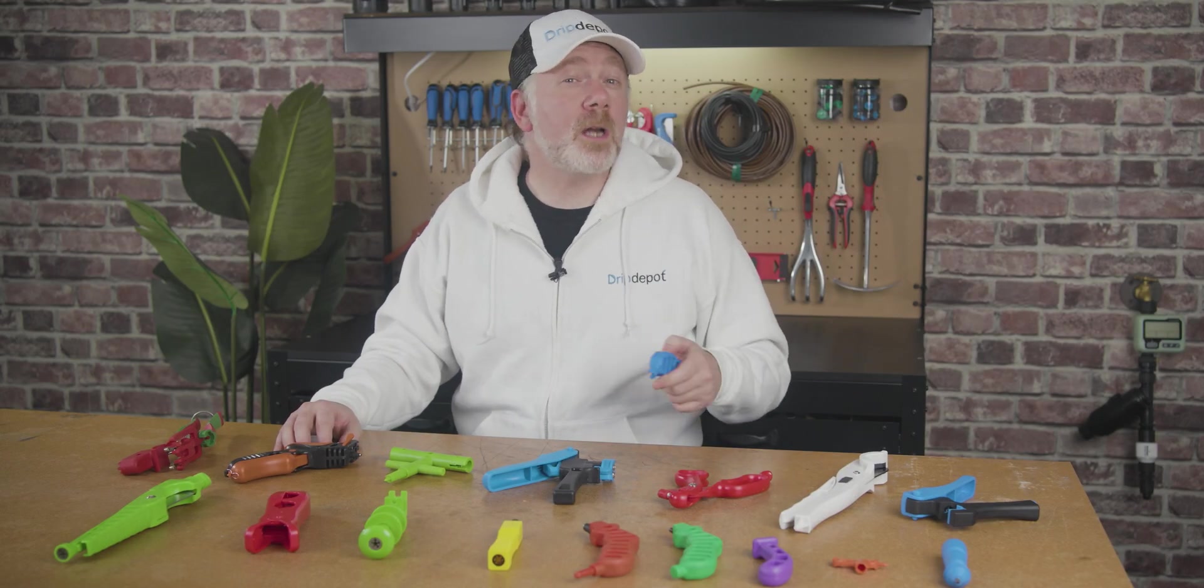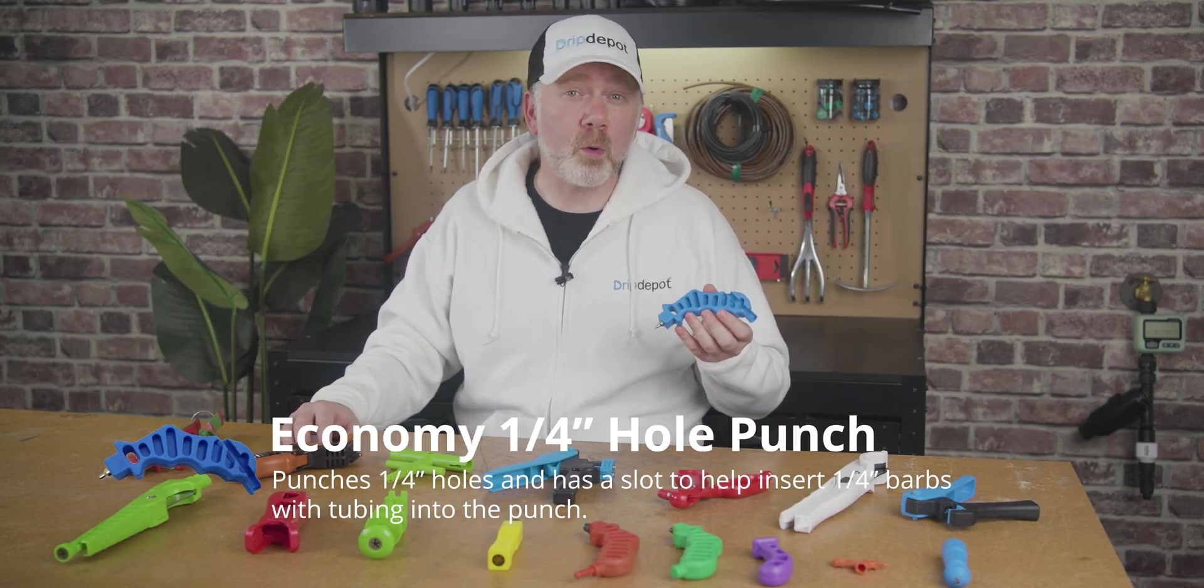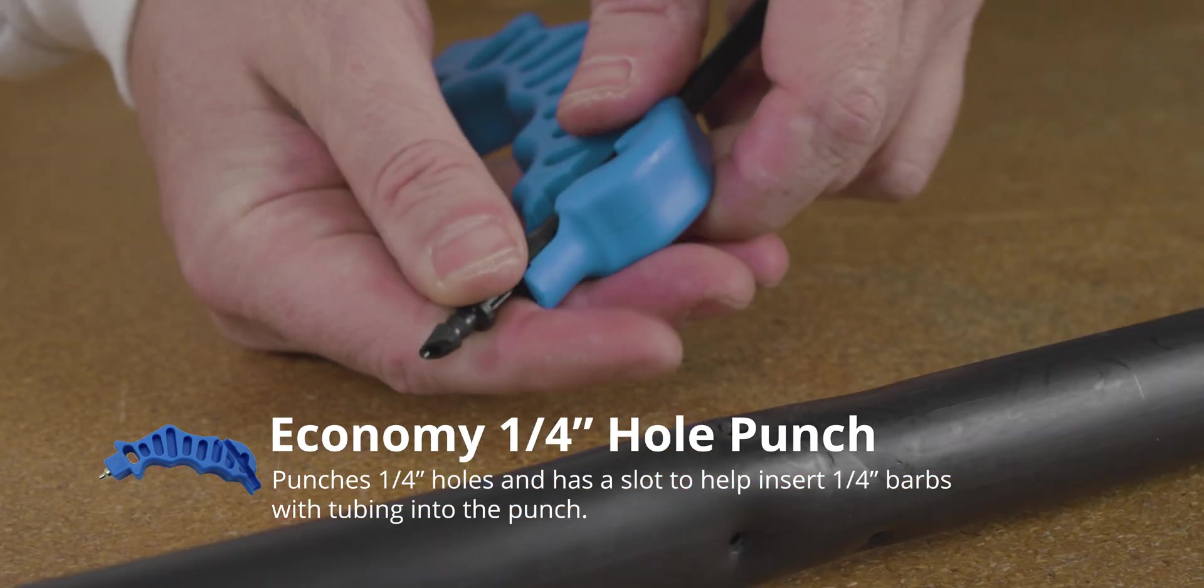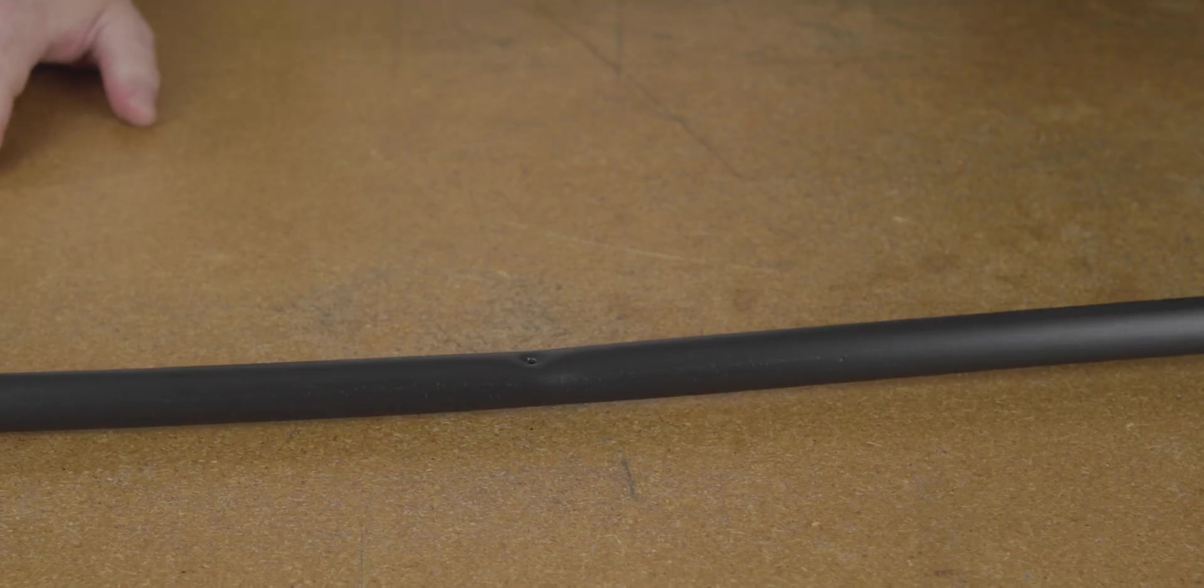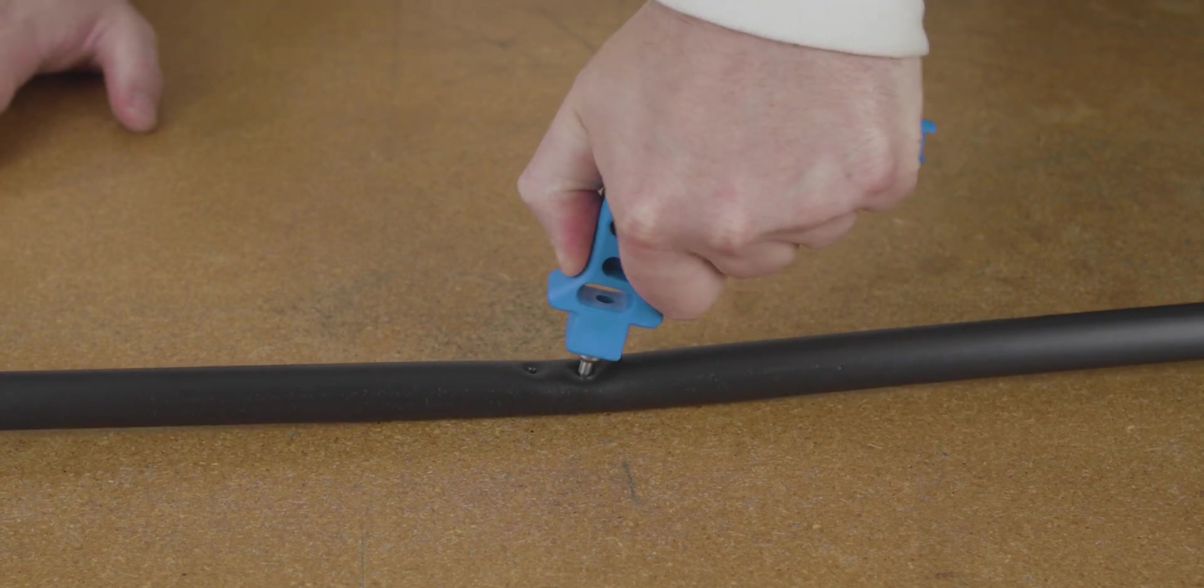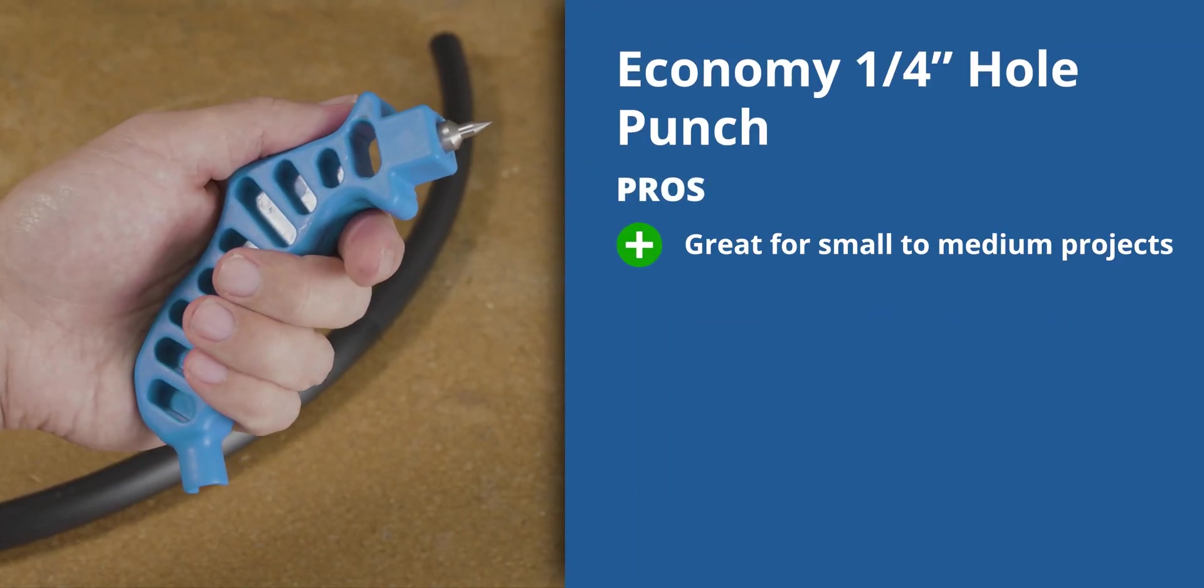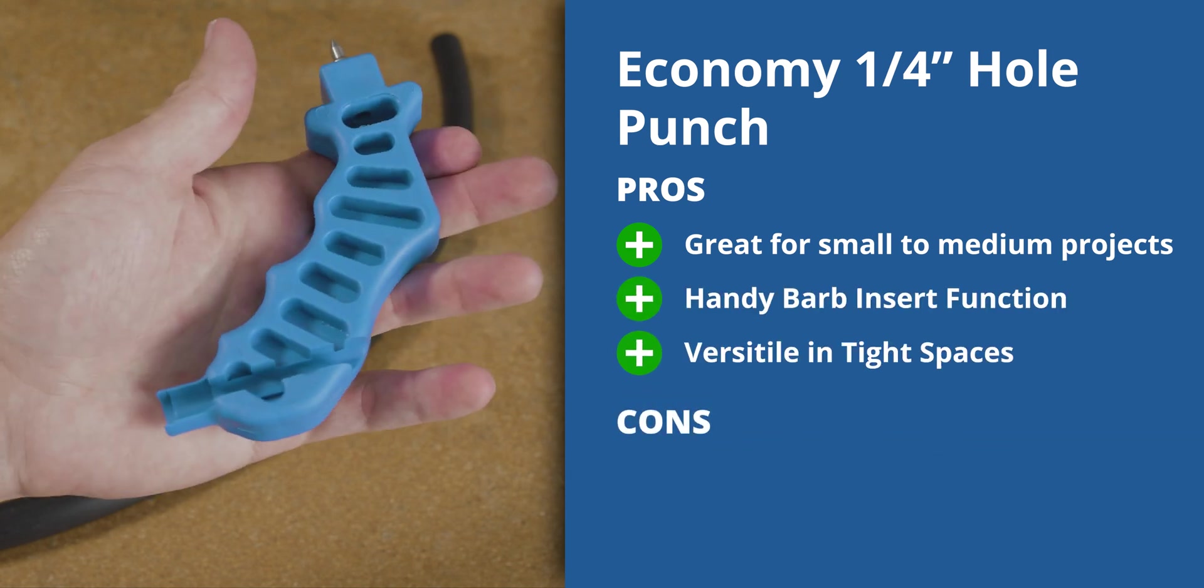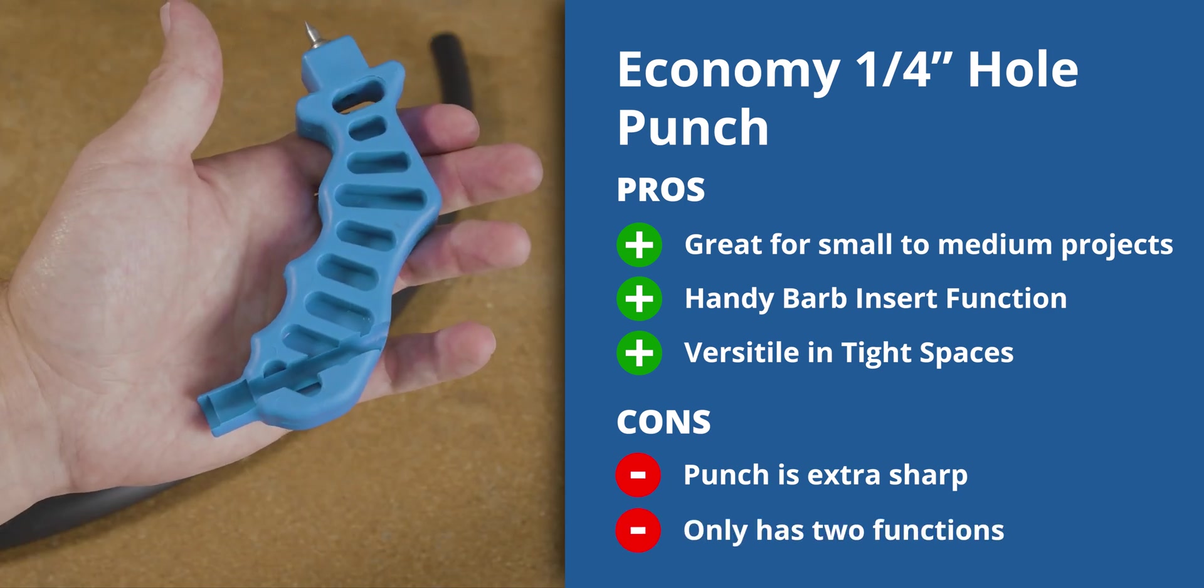Don't let the low price on our economy punch fool you. It is durably constructed, ergonomic, and punches holes for one-quarter inch fittings into one-half inch or larger tubing. It also has a small slot to aid in the insertion of one-quarter inch barbed fittings into one-quarter inch tubing. The tip on it is sharper than you see with most other punches, making it slightly easier to punch the hole and providing a slightly smaller hole that makes for a very tight fit with our quarter inch fittings. If you're going to be punching a number of holes and really want some help inserting one-quarter inch fittings while on a budget, this punch can be a solid economical option for you. The only downside is this punch is so sharp you have to be a bit careful with it and it only has two functions. You'll also need either scissors or a cutter to complete your install.